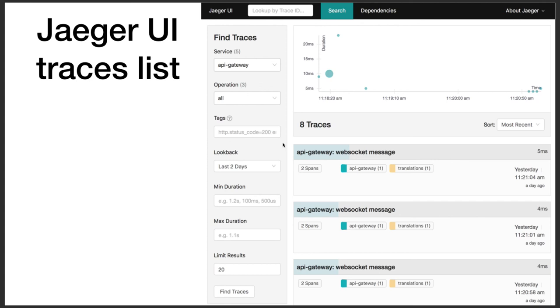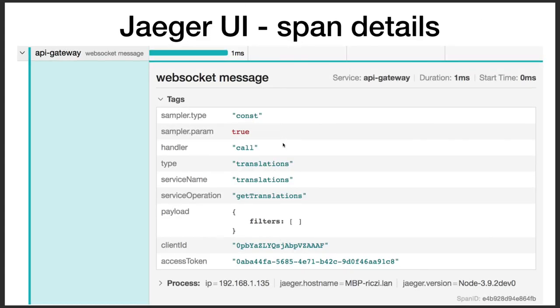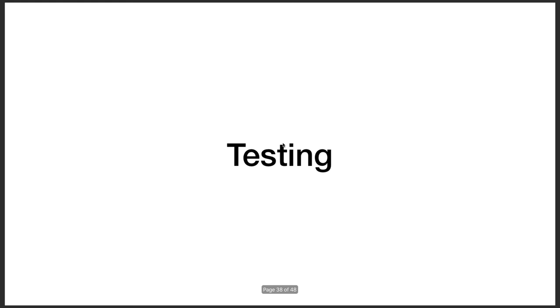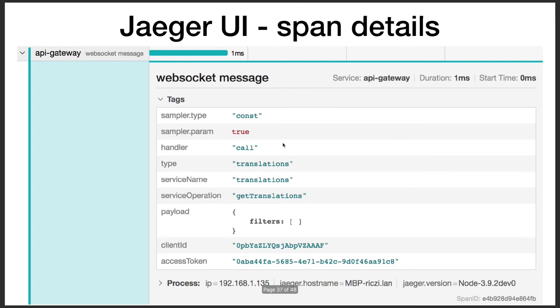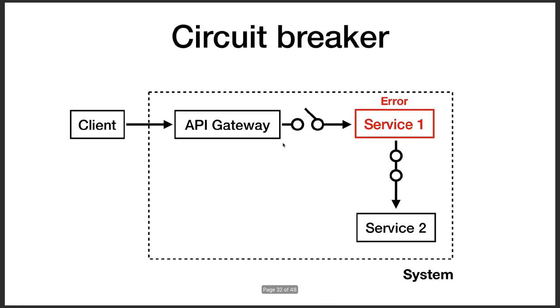In a distributed tracing tool you can see multiple traces flowing across different services. You can drill into each trace and inspect it in detail.